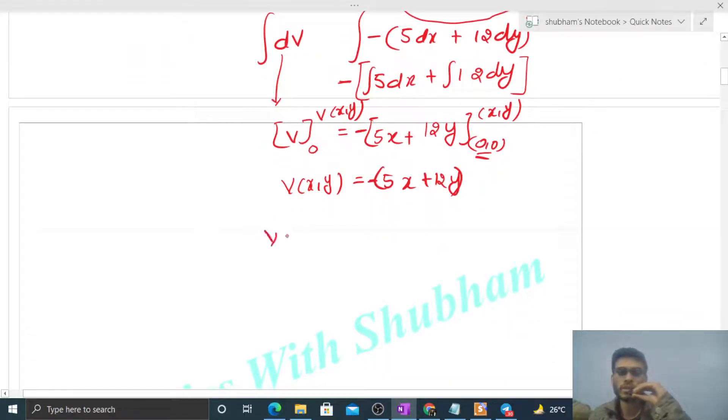The potential at (12,0) is -(5×12 + 12×0) = -60. The potential at (0,5) is -(5×0 + 12×5) = -60.